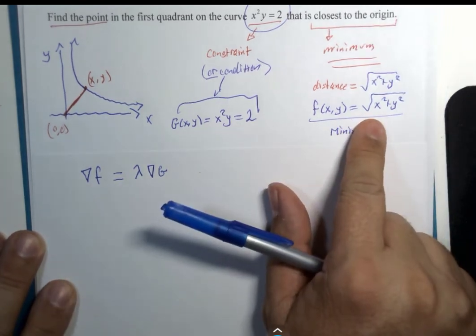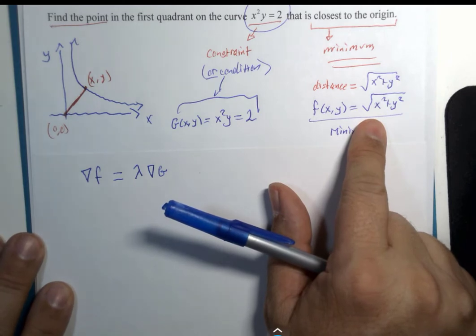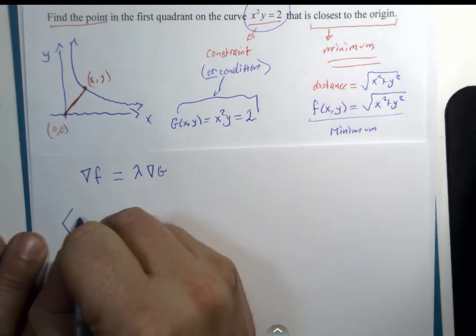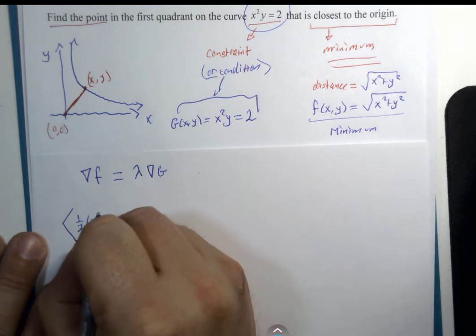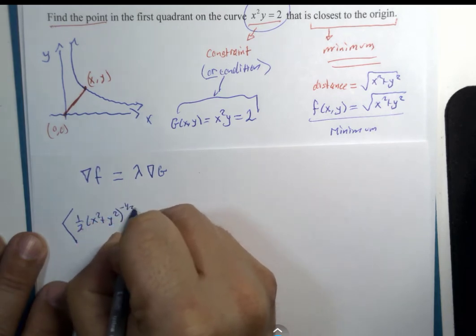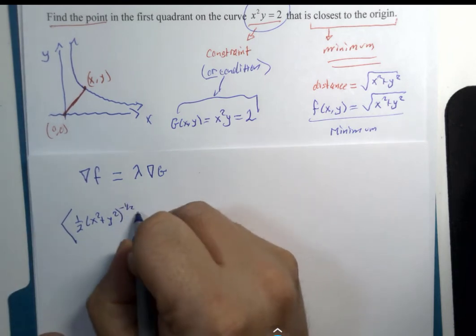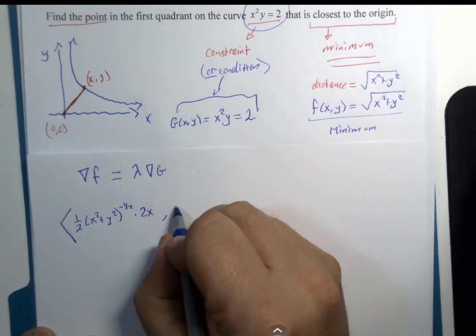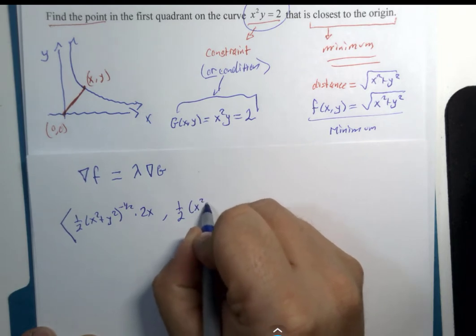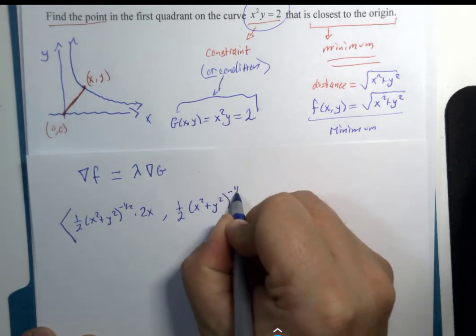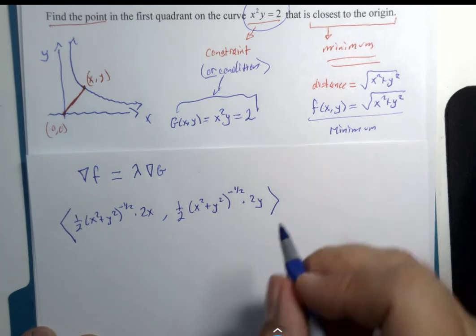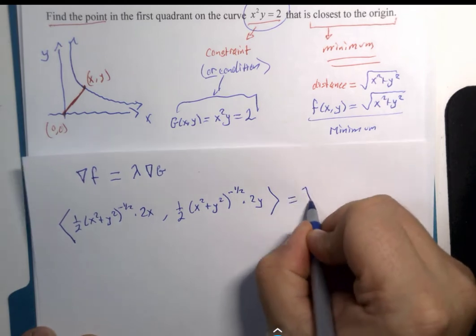So, if you take the x partial derivative of this statement, you will get, well, let's write it out. One half x squared plus y squared to the negative half power multiplied by 2x. And if you take the y partial derivative of this, you'll get one half multiplied by x squared plus y squared to the negative one half power multiplied by 2y. Next time, pause. And you do it before I do it. Hit the pause button.